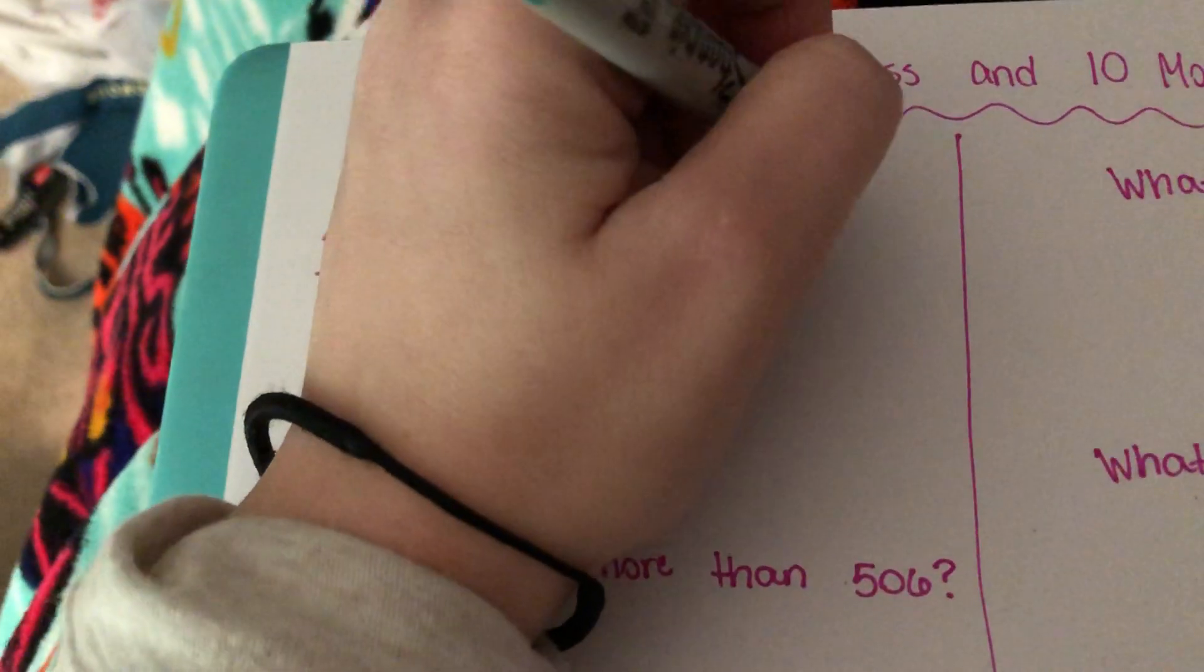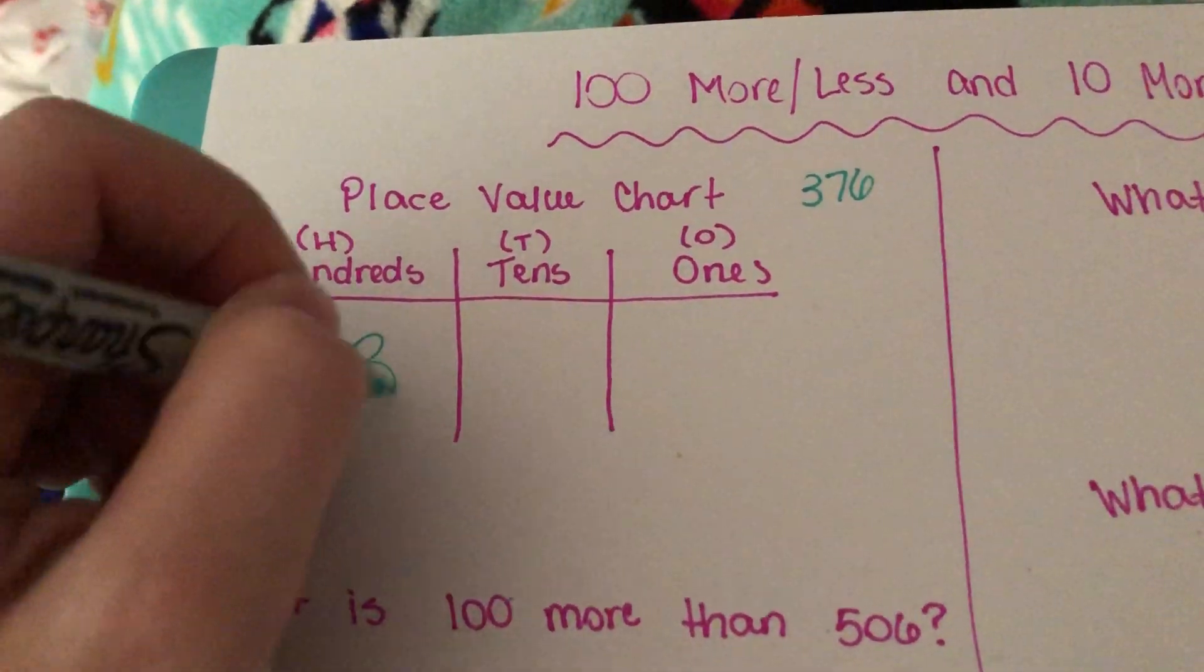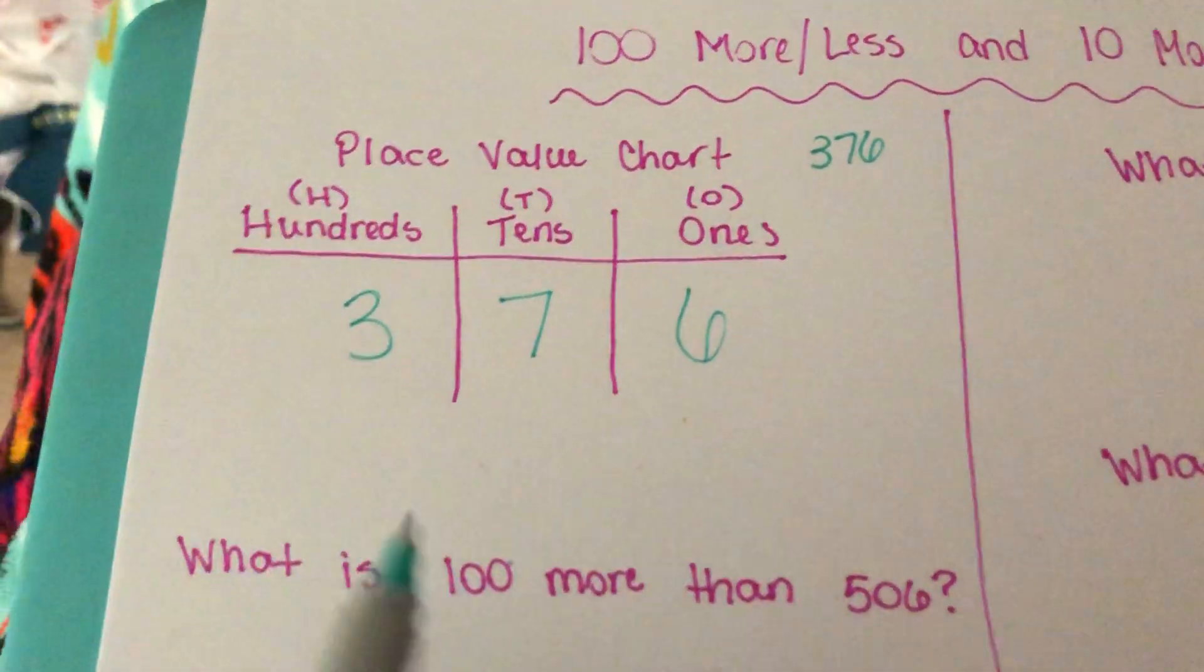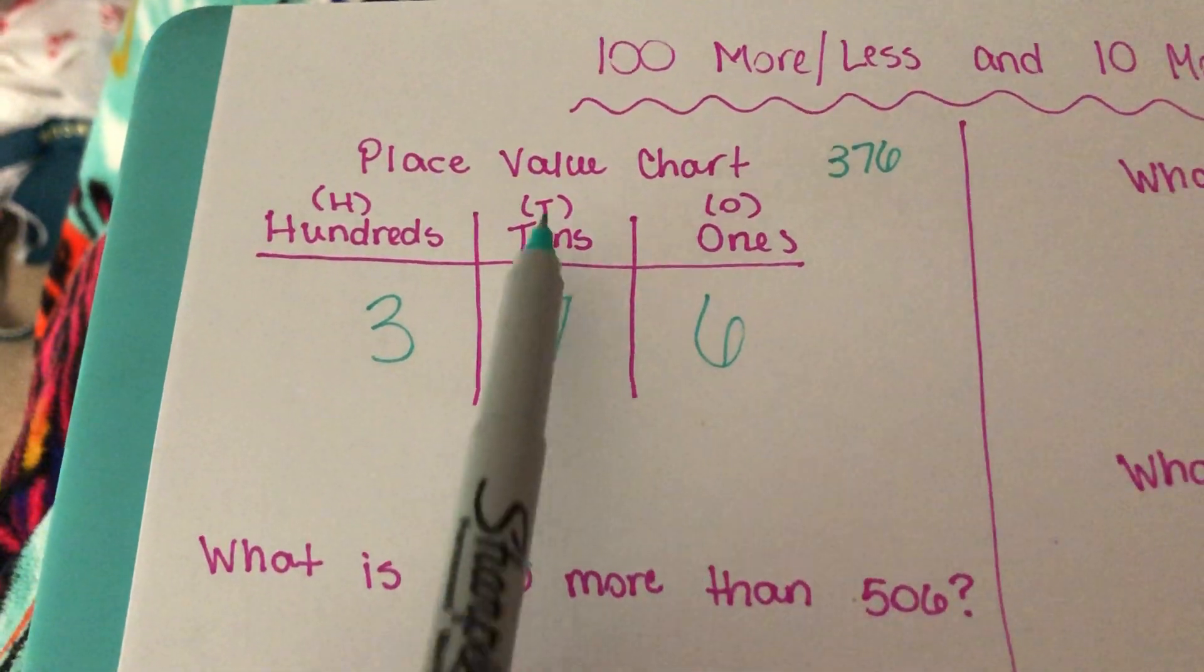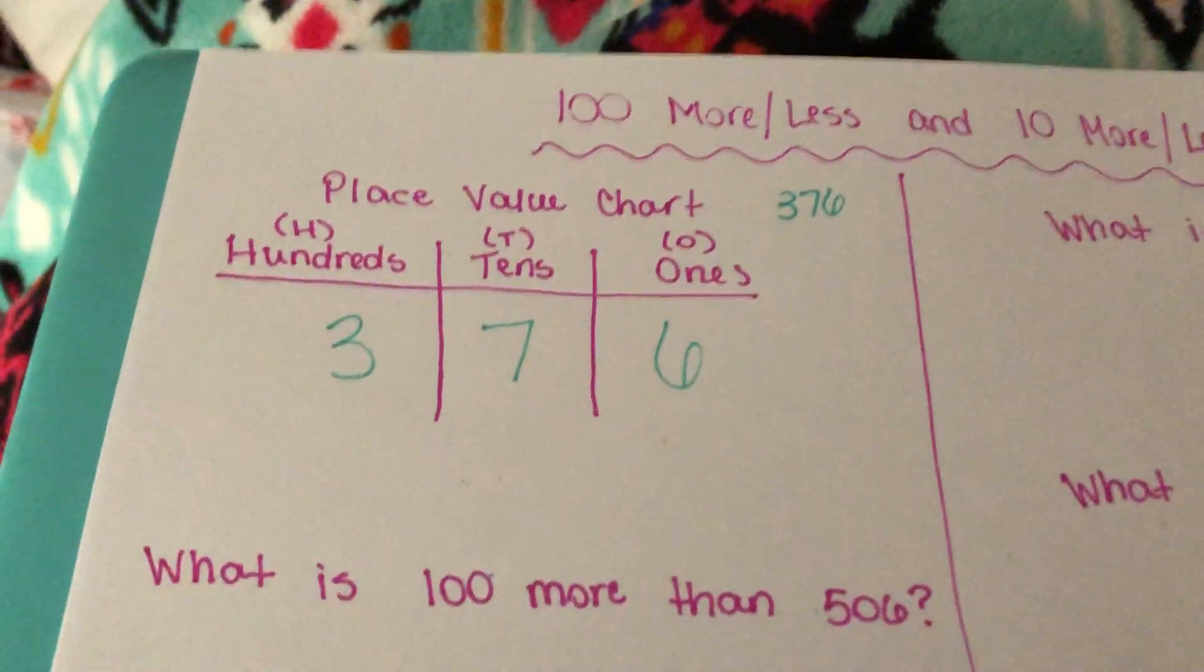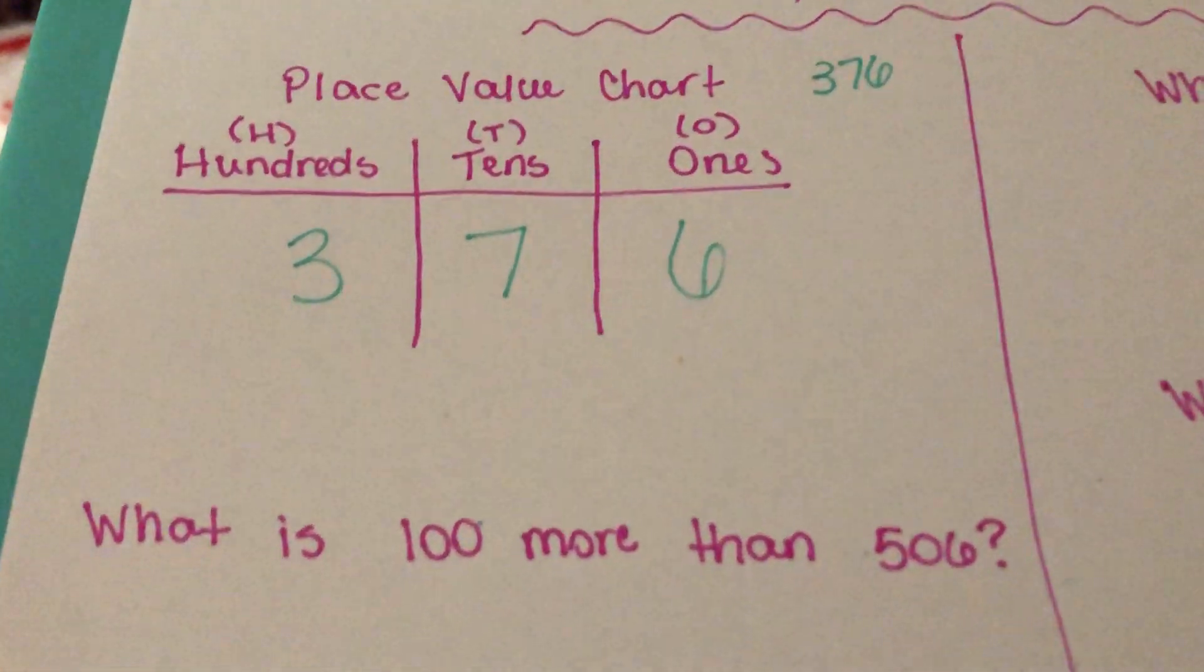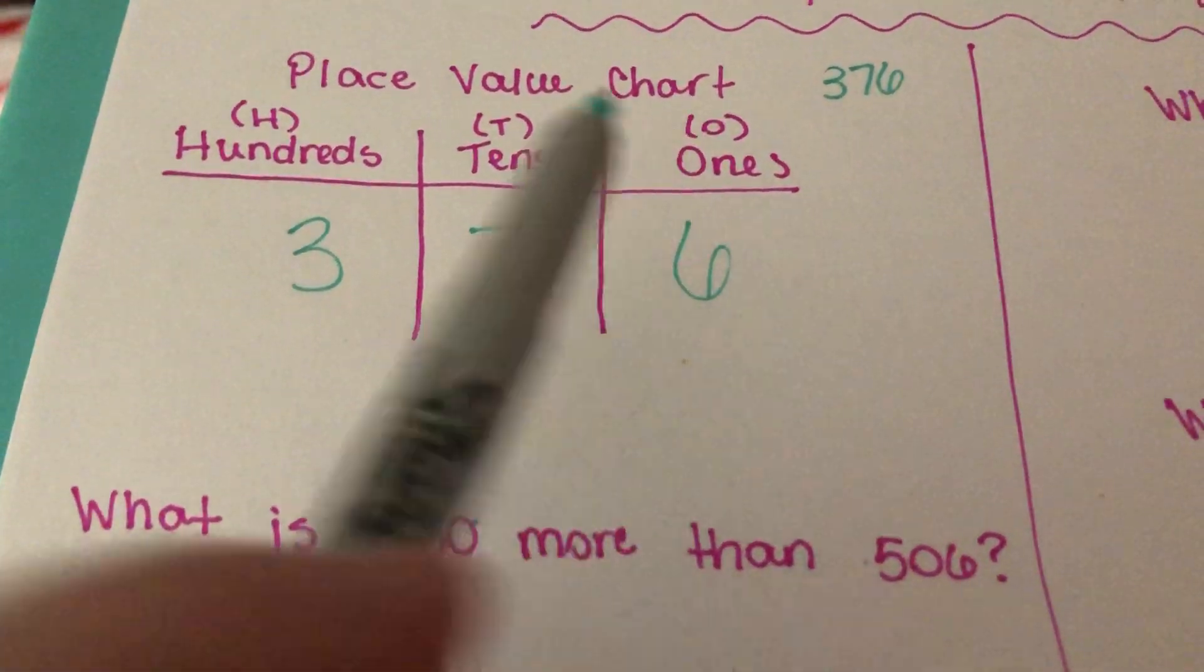So let's say we wanted the number 376. All we would do is we would write 3, 7, 6. It shows that the 6 is in the ones place, the 7 is in the tens place, and the 3 is in the hundreds place. Now if you ask your child what the value of each of these numbers is, they should be able to answer this. Six ones, the value of that 6 is simply 6.